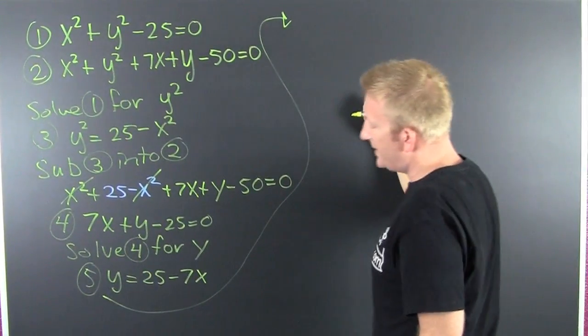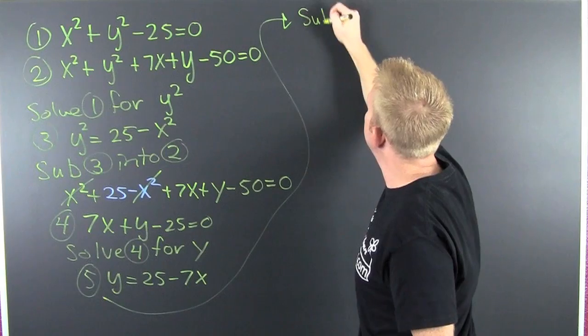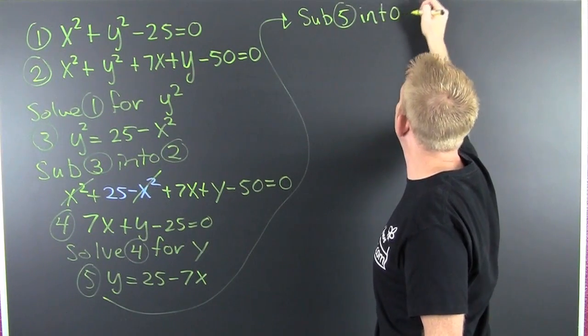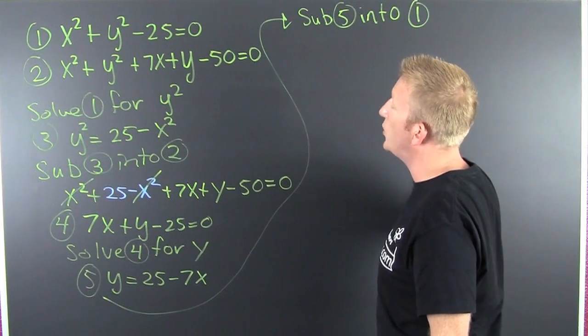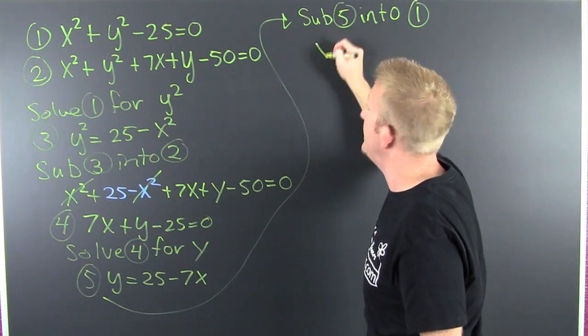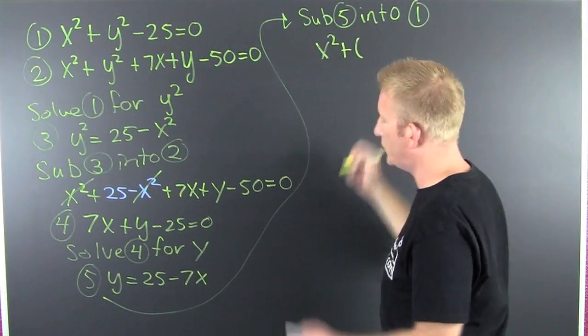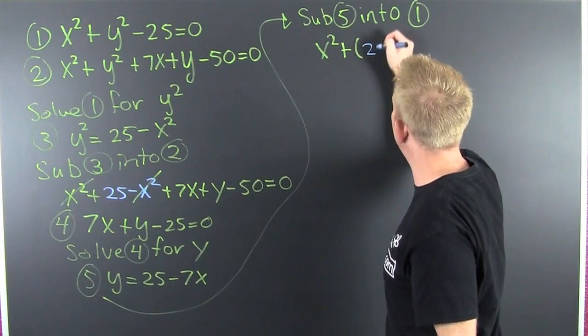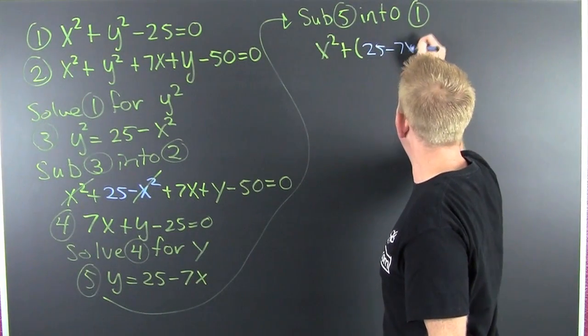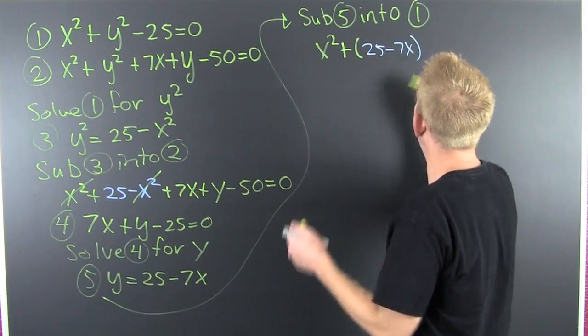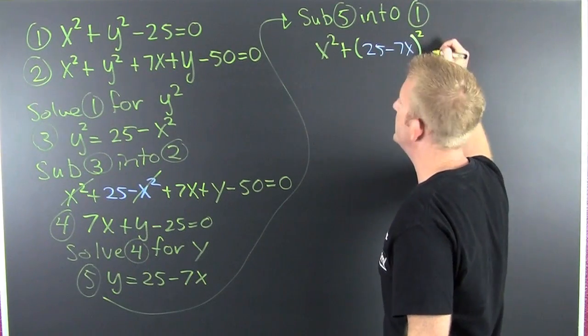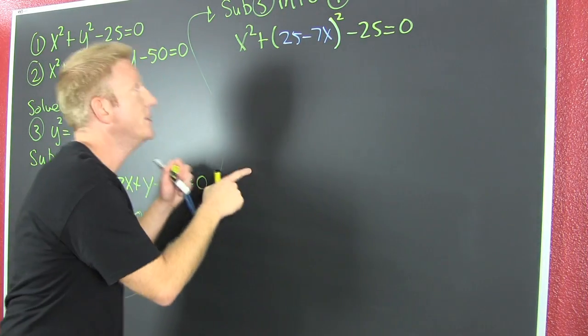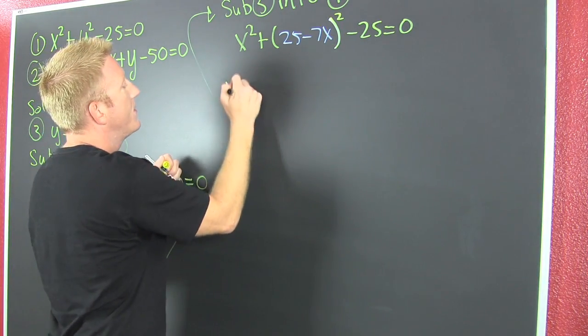I'm gonna take that and throw it back into equation 1. Sub 5 into 1. So then I'm gonna have x squared plus, everywhere I see a y I'm gonna put 25 minus 7x, and then that's gonna be squared, minus 25 equals 0. And that brings us over here.